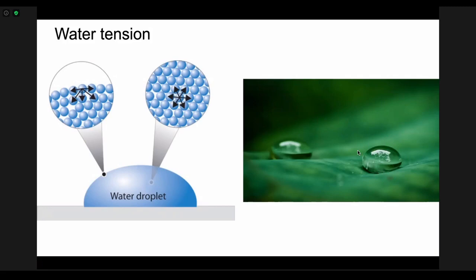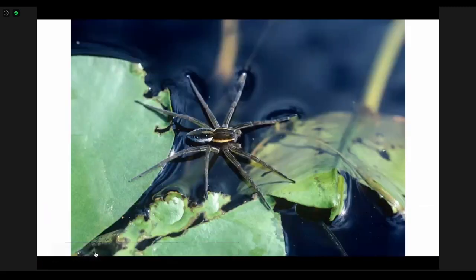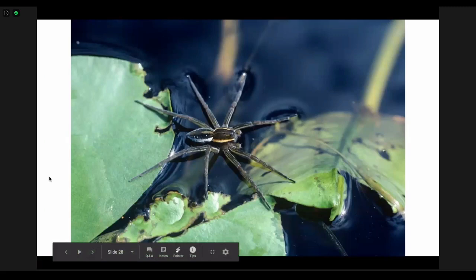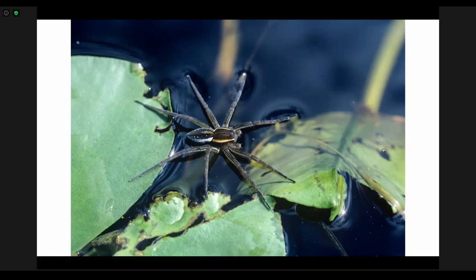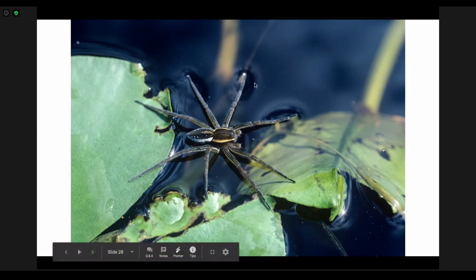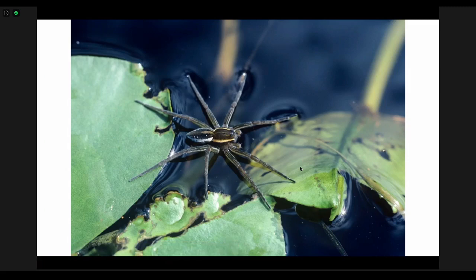This spider uses the water tension of this pond to actually walk on water. So its legs, they don't apply enough force to the water to pierce through, and the surface tension, like we would, that's why humans can't walk on water, we're too big, we have too much force, the surface tension can't hold us. But the spider is light enough that the surface tension of the water can hold it above the surface of the water.